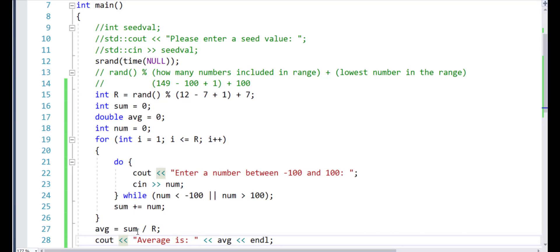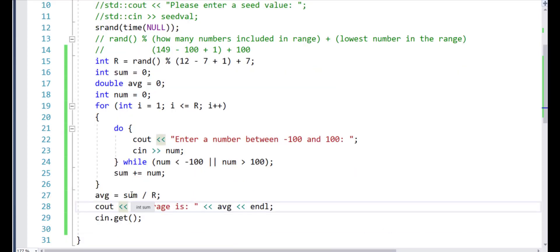Once this loop ends, we will now compute the average by dividing the sum by the total number of numbers that were accepted from the user. And then we display the average.